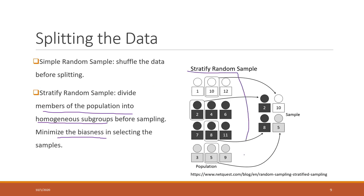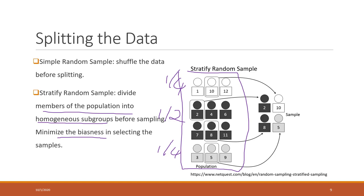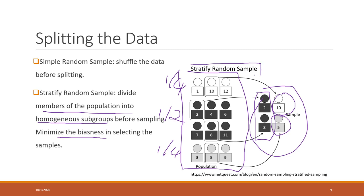For example, if our original data has one-fourth white, one-half black, and one-fourth gray, when we do the sampling we will make sure that half of the samples are still black, one-fourth are white, and one-fourth are gray. That is stratified random sampling, and it is very helpful when we split the data for classifications.